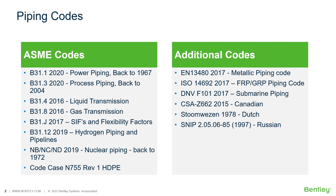STUM-WEEZEN and the SNP code. And last but not least, we include the ASME nuclear codes NB, NC, and ND for class 1, 2, and 3 piping.